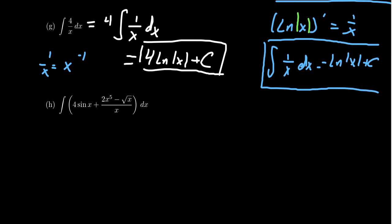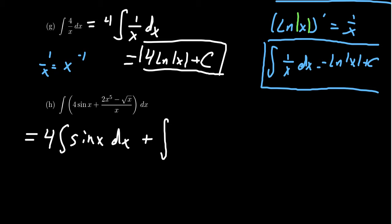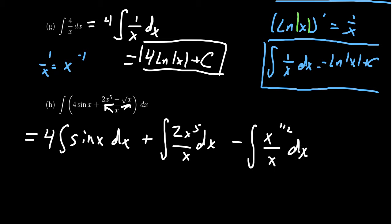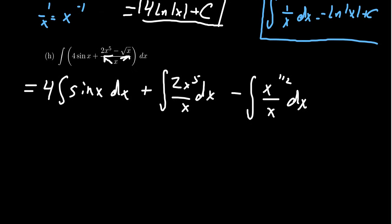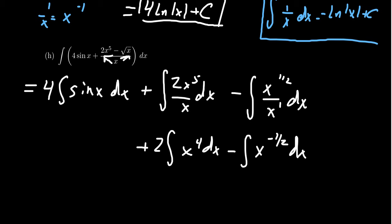Let's look at one last example. Because there are two parts, let's break up the integral: we get 4 times the integral of sin(x) dx. For the next part, I'll break up the fraction since I don't have a quotient rule — I can split it into two pieces: the integral of 2x⁵/x dx minus the integral of x^(1/2)/x dx. I can simplify those fractions to get 2 times the integral of x⁴ dx, minus the integral of x^(-1/2) dx. I can apply the power rule for those.